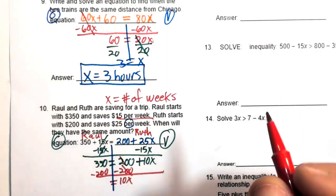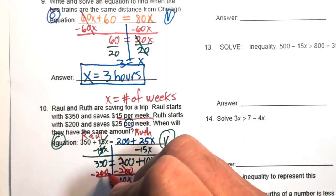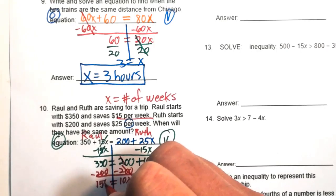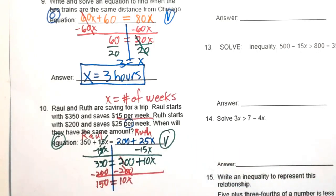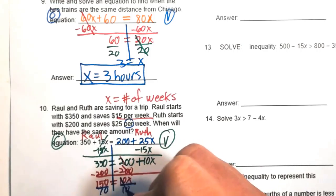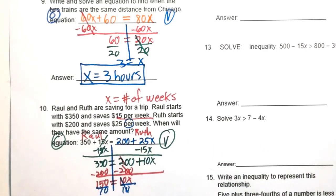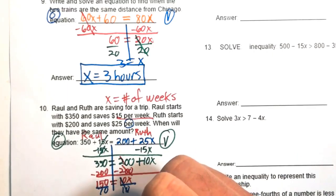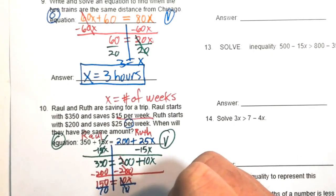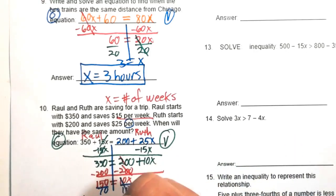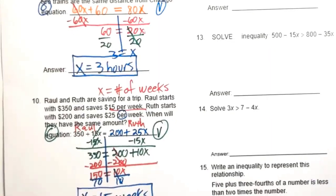Divide both sides by 10: x equals 15. It will take 15 weeks for both Raul and Ruth to have the same amount of money.